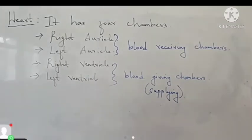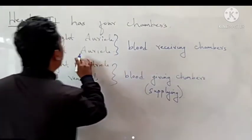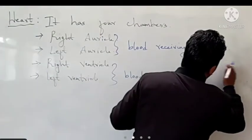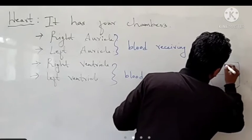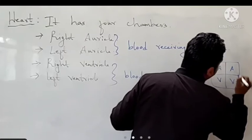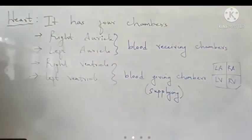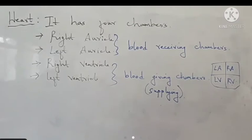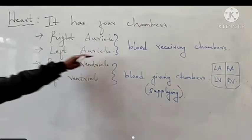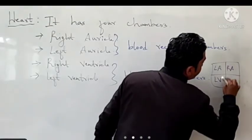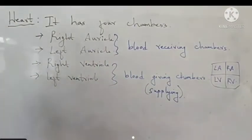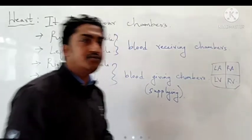The upper two chambers are the auricles and the lower two chambers are the ventricles. So: left auricle, right auricle on top; left ventricle, right ventricle on the bottom. The upper two chambers have a thin wall and receive blood from different parts of the body. This partition is very thin so that the blood can be received and supplied to different parts of our body.